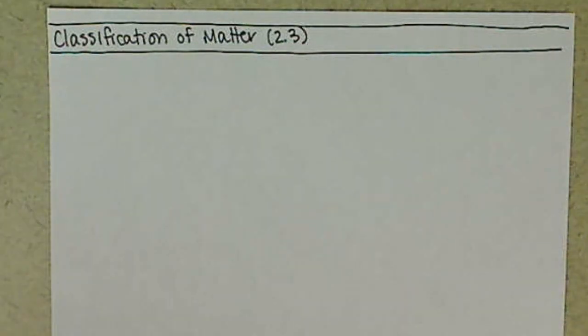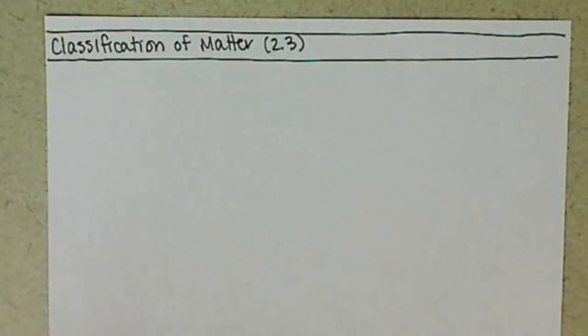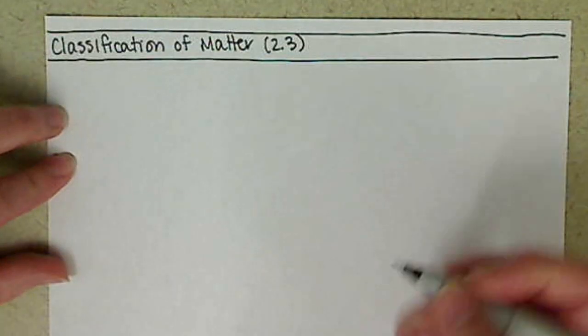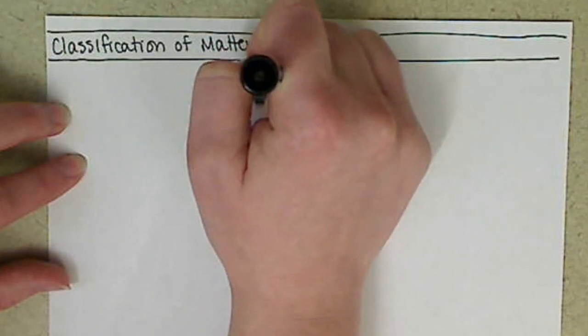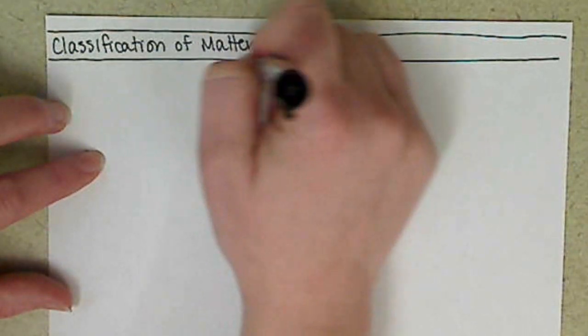We're going to be going through basically from the pre-lecture worksheet, it's going to kind of follow that flowchart that you filled out and just kind of talk about those. So basically at the hierarchy of our flowchart, we have matter.